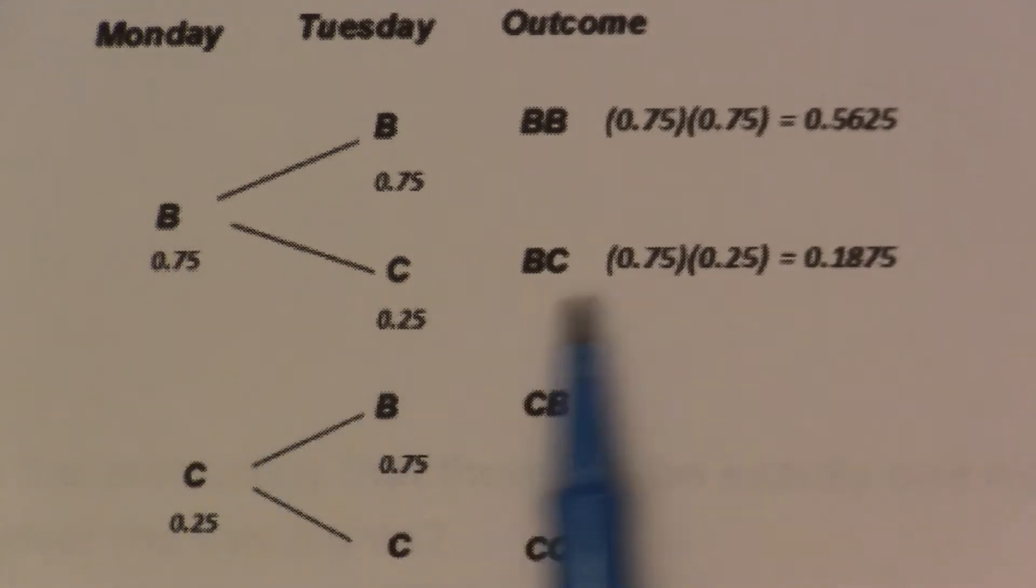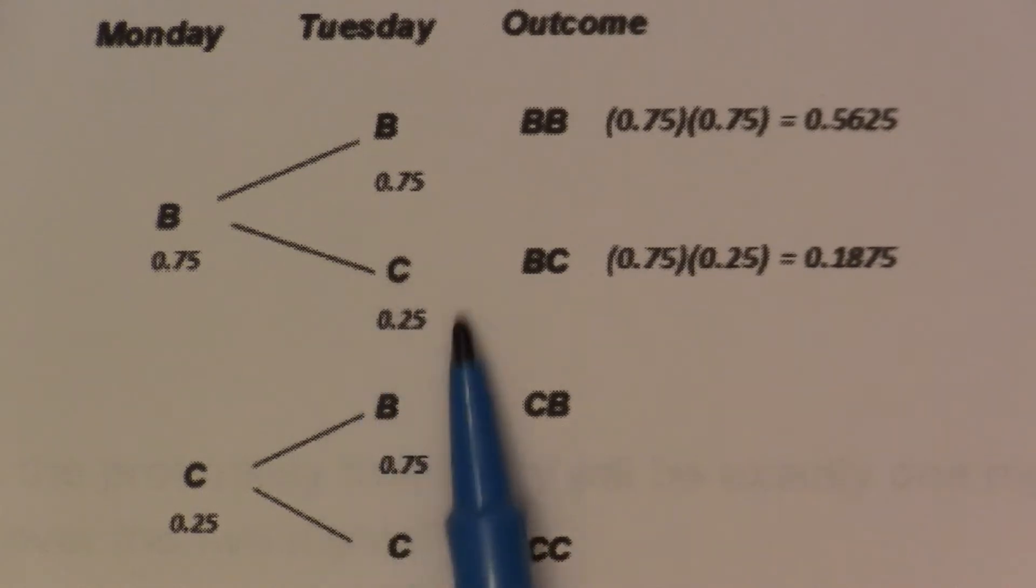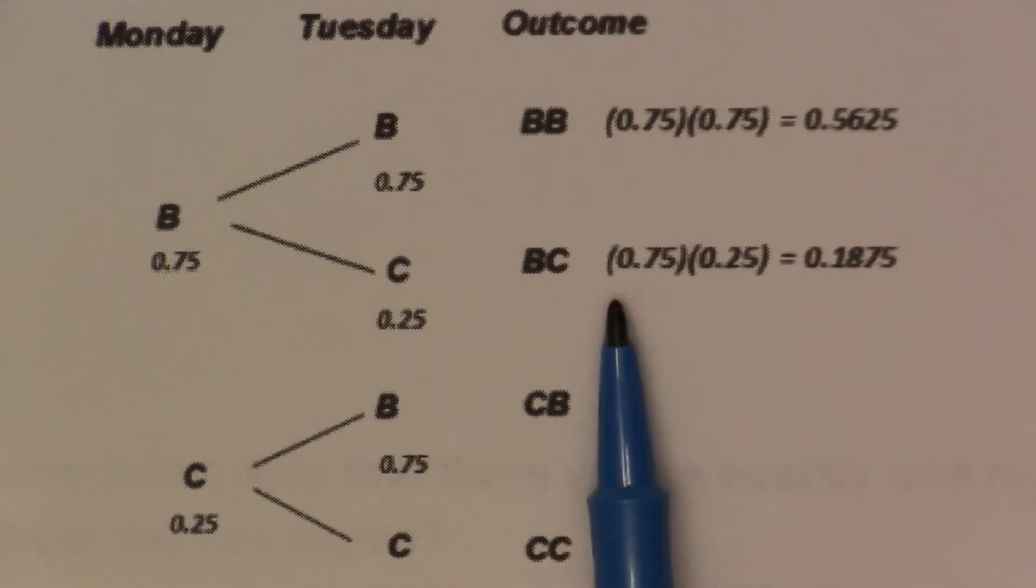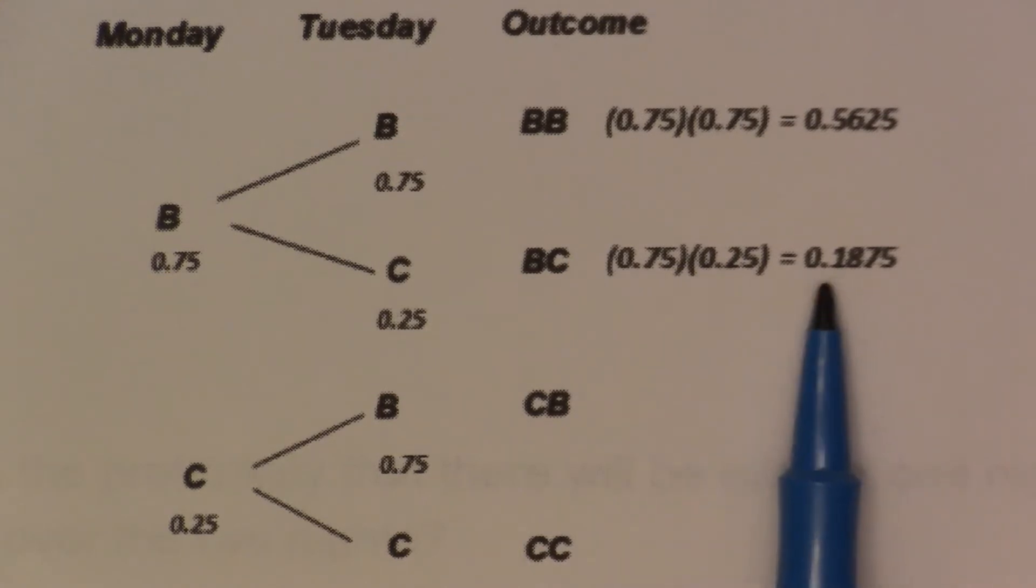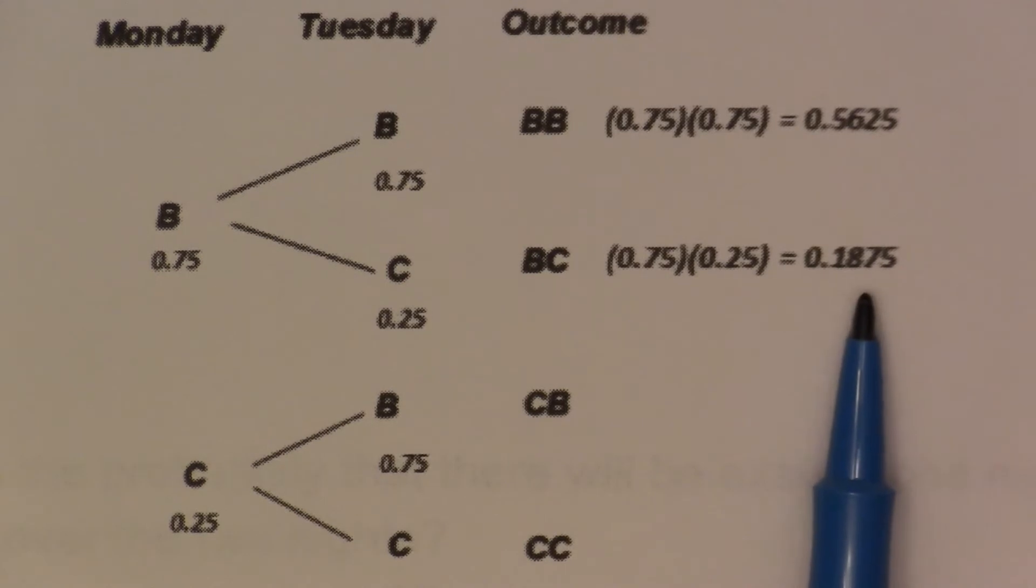They've also given us the next one here, board game and card game, which our card game is only one out of four. So it's a 0.25 or 25% chance of occurring. So we multiply those two probabilities together, 0.75 and 0.25, and we get a probability of 0.1875, or about 19%.